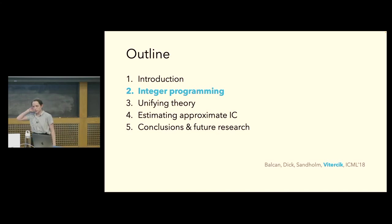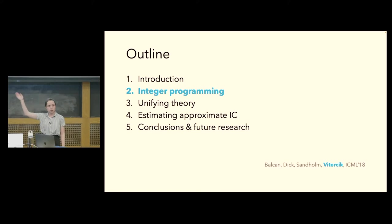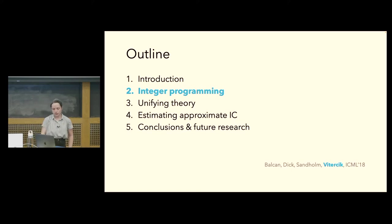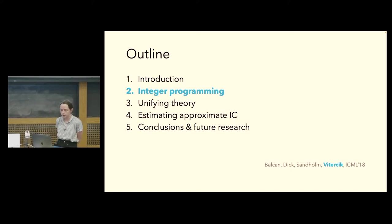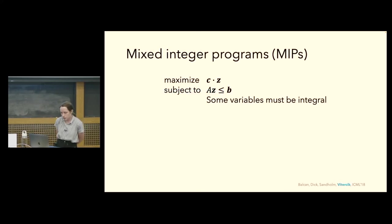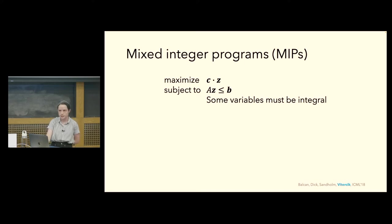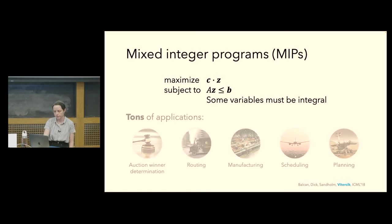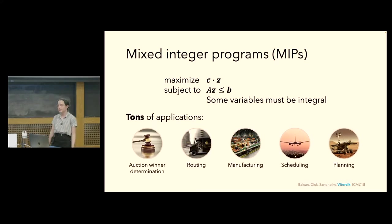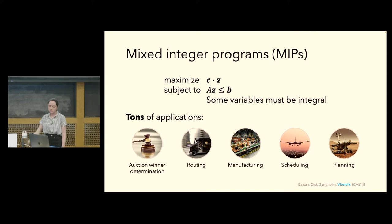I'll start by highlighting research in integer programming, then move on to unifying theoretical results connecting integer programming to mechanism design and other combinatorial problems — primarily from a paper with Nina Balkin, Travis Dick, and Tuomas Sandholm. In integer programming, the goal is to find a vector z maximizing c dot z subject to linear constraints a z ≤ b, with some variables constrained to be integral. Integer programming has a ton of applications: in mechanism design it's used for combinatorial auction winner determination, as well as routing, manufacturing, scheduling, and planning.